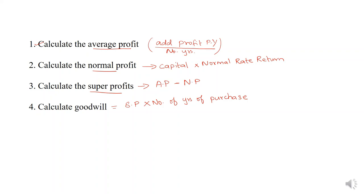To summarize: first, calculate average profit — add the profits of the previous years divided by number of years. Then calculate normal profit — capital employed into normal rate of return. Then calculate super profit — average profit minus normal profit. Finally, goodwill equals super profit into number of years of purchase.